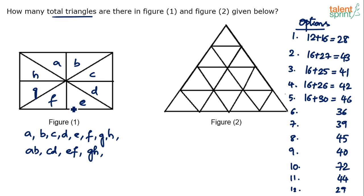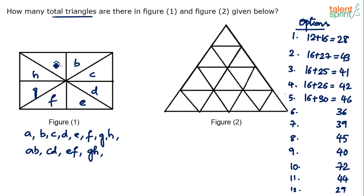We've used single units and double units. Now go for three units — will a combination of three units give a triangle? No. Each of the units here is symmetric, like a triangle. A combination of three triangles will not give you another triangle. So three units is not possible.